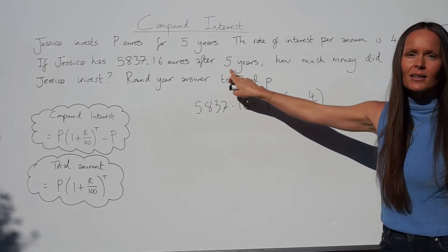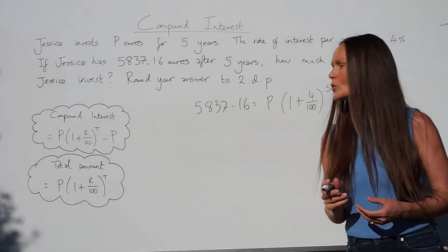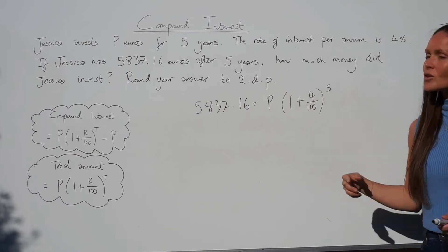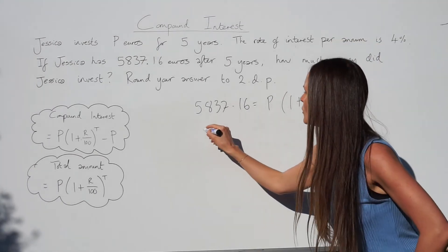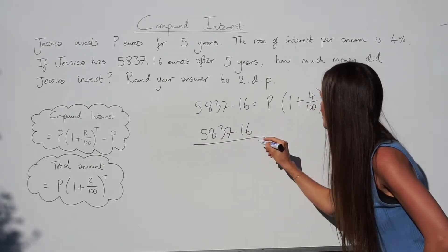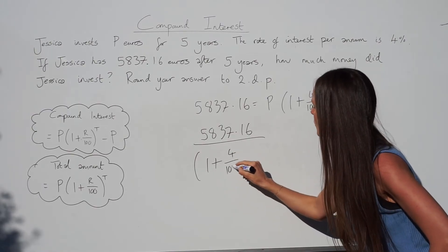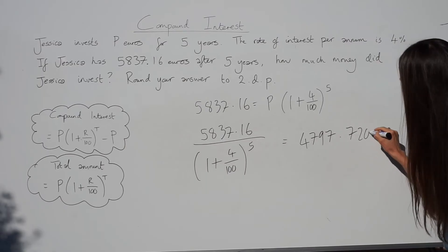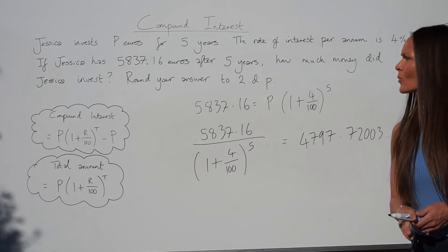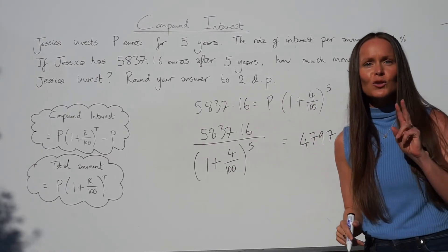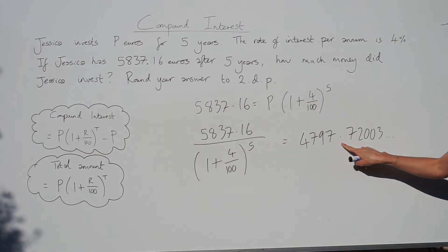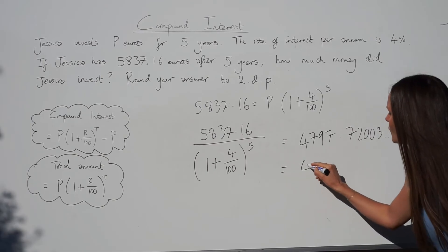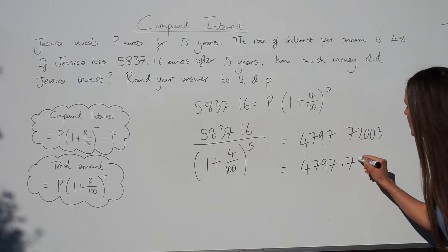The total amount is €5,837.16, which equals P × (1 + 4/100)⁵. To solve for P: the opposite of multiplying by (1 + 4/100)⁵ is dividing, so divide both sides by (1 + 4/100)⁵. This gives 4797.7200 and so on. Rounding to two decimal places — the third digit after the decimal is 0, which is smaller than five, so it doesn't round up — giving P equals €4,797.72.